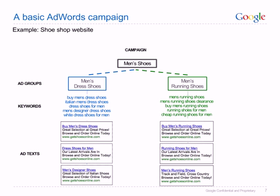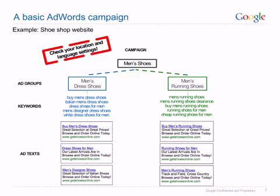Let's say you own a shoe shop and your website offers a range of different types of shoes. You decide you'd like to advertise men's shoes — that could be a campaign. You want to advertise both men's dress shoes and running shoes, so these could be your ad groups. Make sure each ad group contains keywords that directly relate to your product. What words do you think your customers will use when searching for this type of product? These words could let your ad appear next to the Google search results and should be included as keywords.